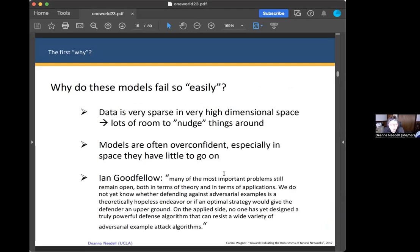So you might ask yourself, why do these models fail so easily? I put easily in quotes because coming up with these adversarial examples is non-trivial, but looking at them from the human eye perspective, they are very trivial. I think some of the reasons are: first, data is very sparse in high-dimensional space. If you look at the images we're using in applications compared to their pixeled ambient dimensional space, it's very large and the data itself is very sparse. So there's lots of room geometrically to nudge things around and get you into bad situations.